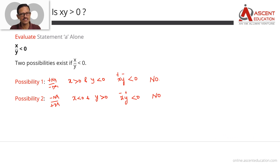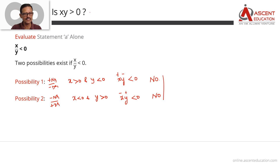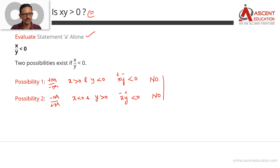So if X by Y is less than 0, there are only two possibilities: one number positive and the other negative — either numerator positive, denominator negative, or numerator negative, denominator positive. In both cases, the answer to the question is no. We got a uniform 'no', so Statement A alone is sufficient.